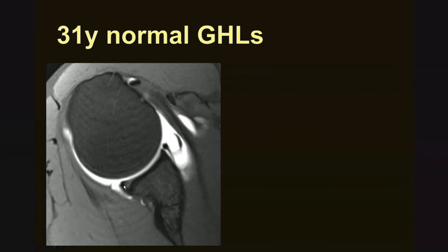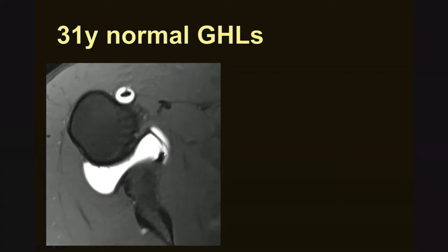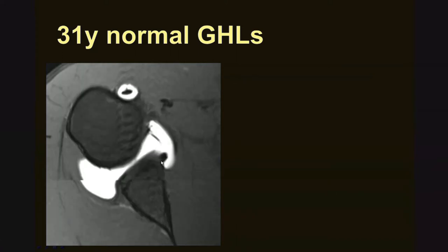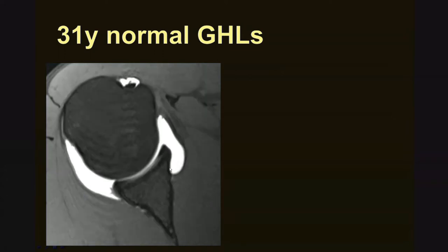Notice here posteriorly, the labrum is normally situated over the glenoid rim and is partially undercut by articular cartilage — that is also normal. As we follow the labrum more inferiorly, here is some cartilage, here is the normal labral contour, and then here is the IGL, the inferior glenohumeral ligament. We follow it back up to its attachment site at the base of the labrum, and you can see how it also partially attaches to the adjacent bone. The labrum can tear here, and the whole labral ligamentous complex can strip medially along the glenoid neck.